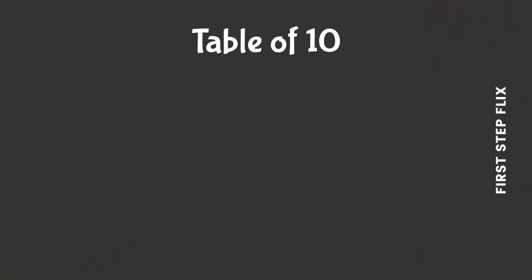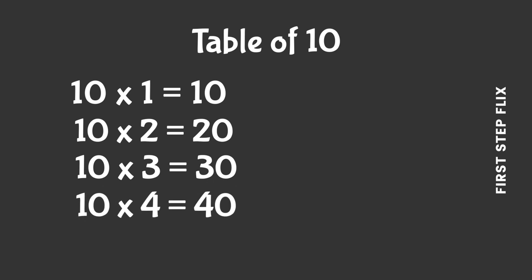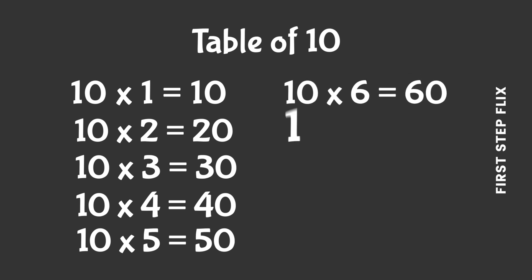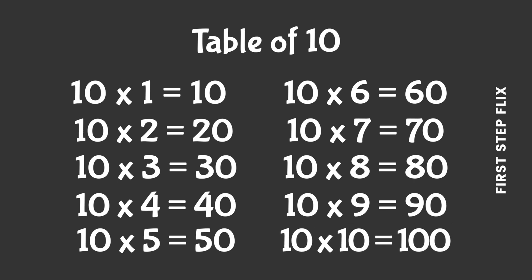10 ones are 10, 10 twos are 20, 10 threes are 30, 10 fours are 40, 10 fives are 50, 10 sixes are 60, 10 sevens are 70, 10 eights are 80, 10 nines are 90, 10 tens are 100.